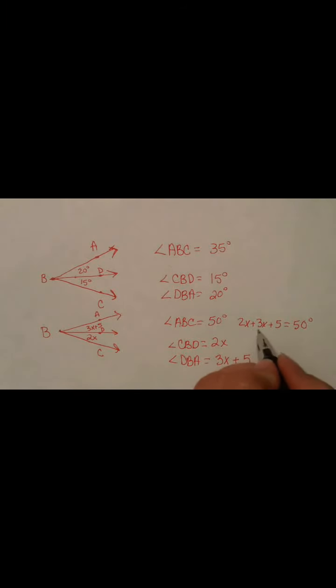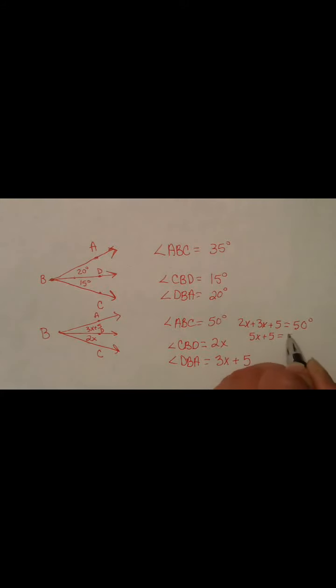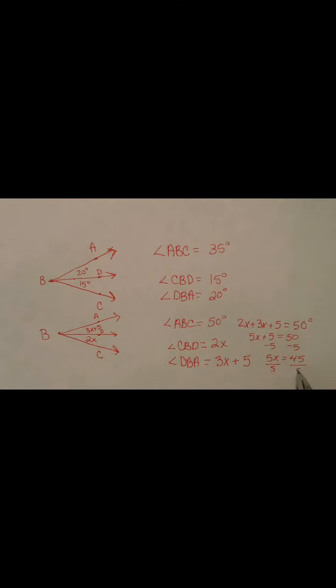So, then all we have to do is solve that. We're going to combine like terms. So, we have 5X plus 5 equals 50. We're going to subtract 5 from both sides. We have 5X equals 45. Divide both sides by 5. And we have X equals 9.